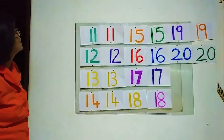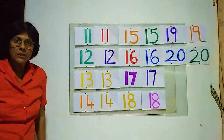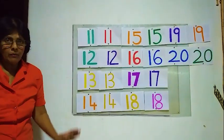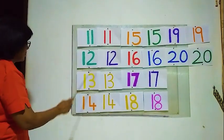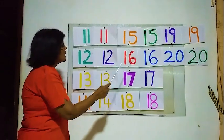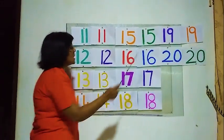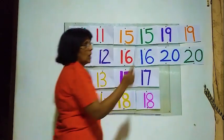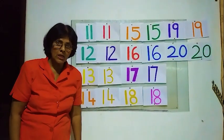We match figures and figures, we match numbers and numbers. If you want, we can count: eleven, twelve, thirteen, fourteen, fifteen, sixteen, seventeen, eighteen, nineteen, twenty. Okay? That's all, children. Thank you for listening.